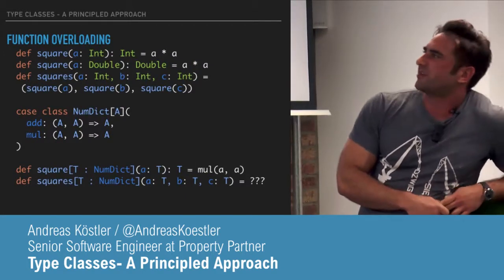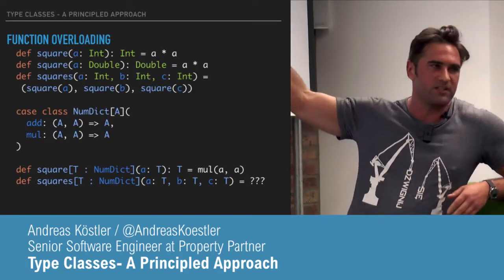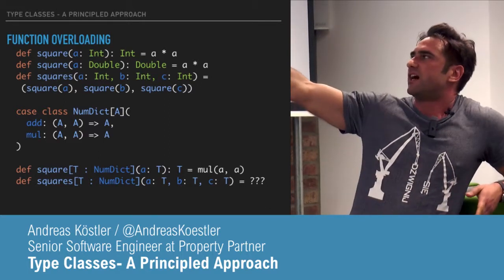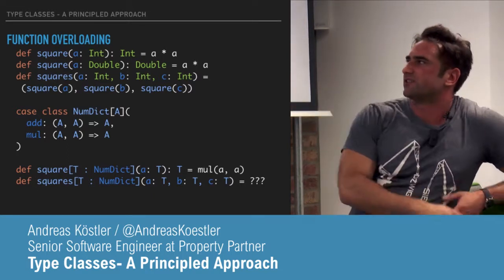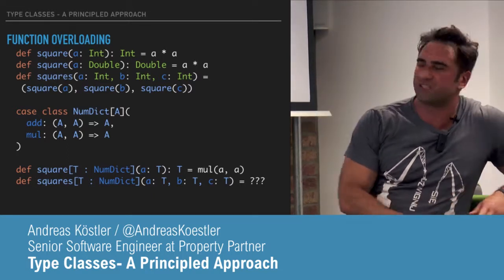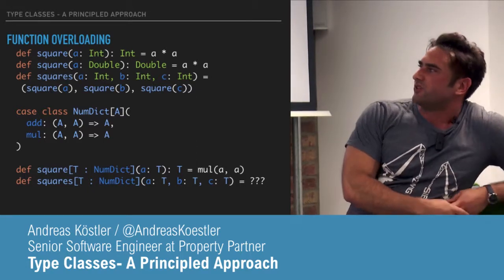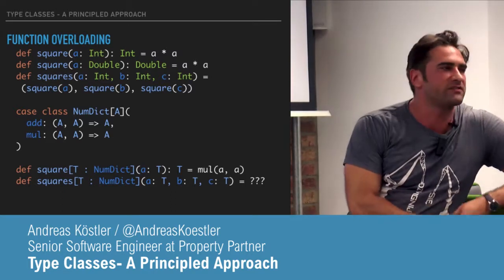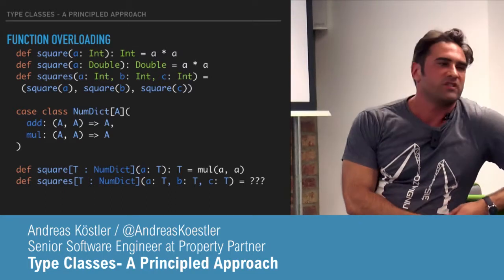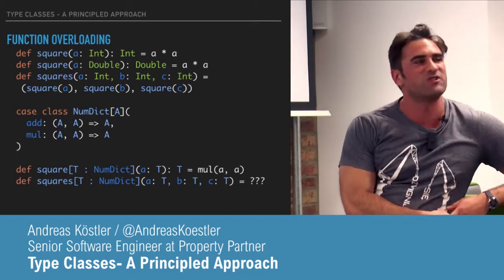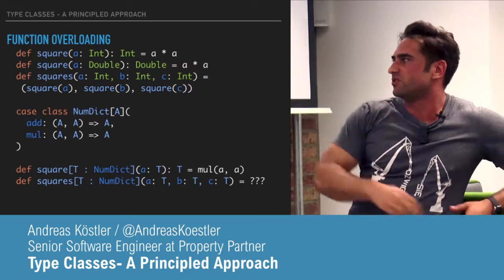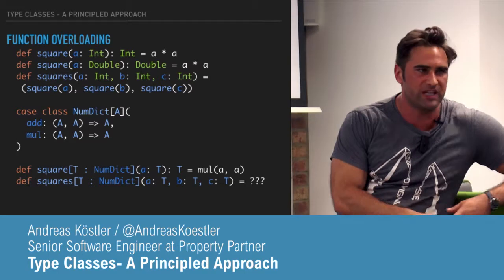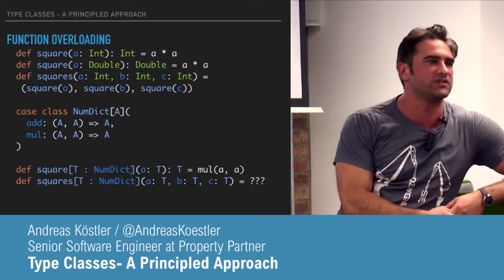Function overloading: let's say we don't have type classes and we have Java-like function overloading. You have square for Int, square for Double — nothing special there. But once you get into a 'squares' function that gives you a tuple of three squares, if you want to overload every possible combination of your two types, you end up with eight squares functions. You don't want that. Using a dictionary, you can do function overloading without that exponential explosion of implementations for your types.